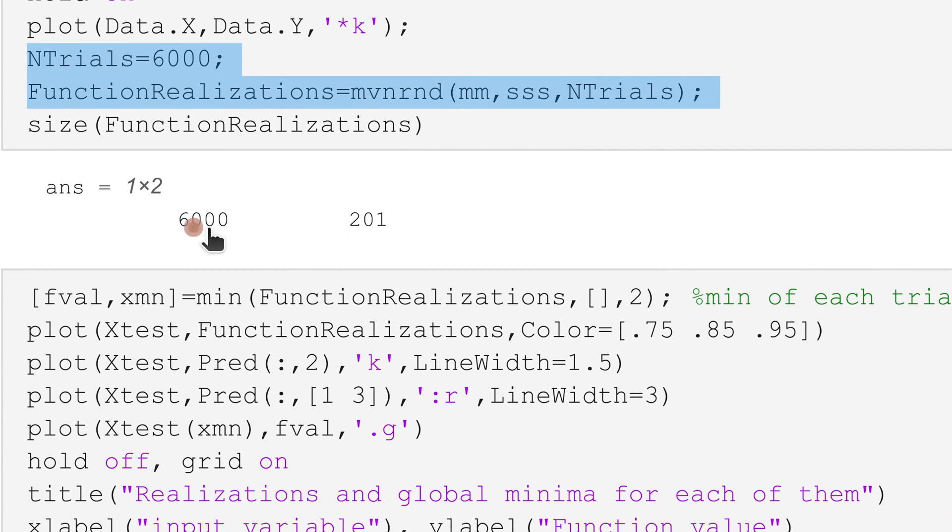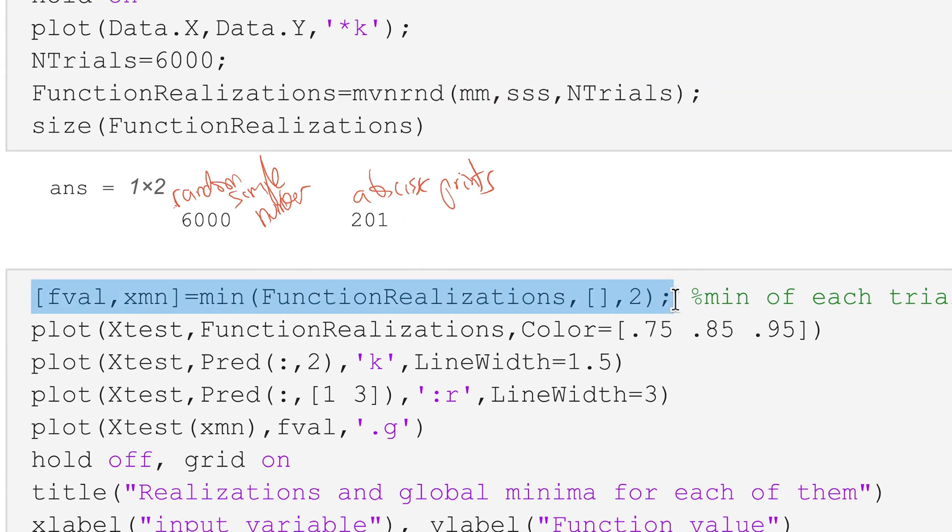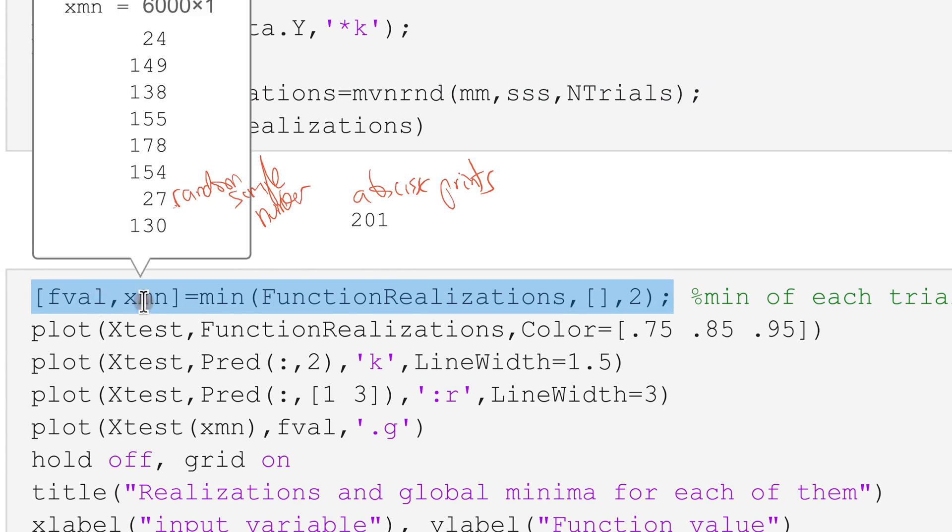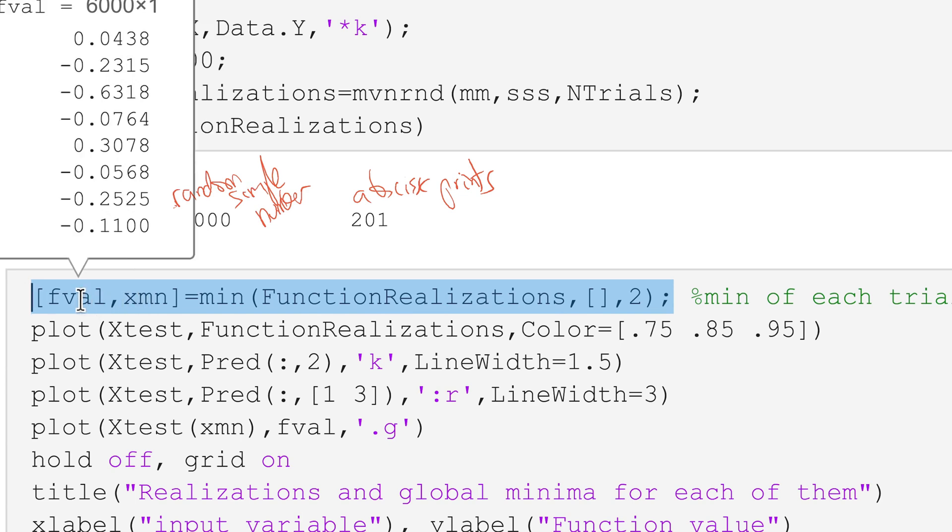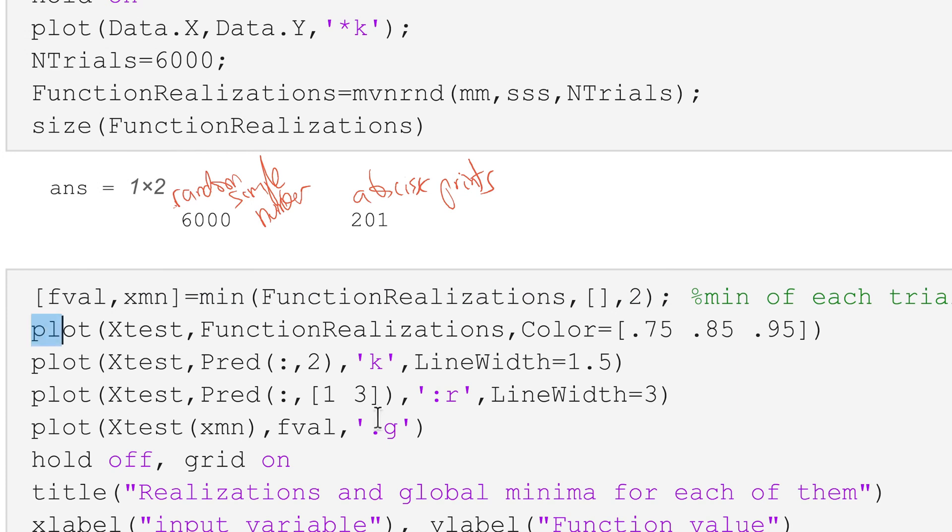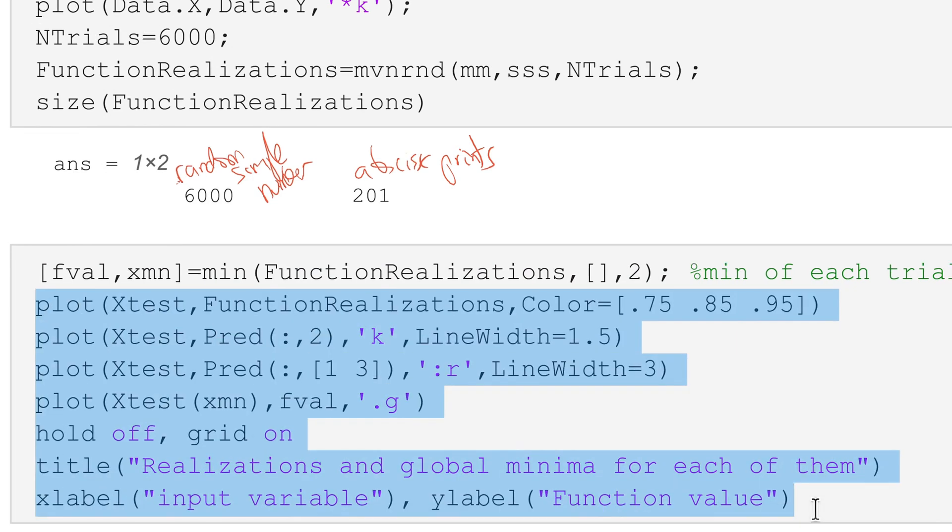So if I take six thousand trials, then I get six thousand samples of functions evaluated at 201 points in the abscissa. So these realizations have six thousand rows, each one for one of the functions, and the function values at 201 points are in each of the elements of the rows. So this line computes the minimum of each row and stores the position at XMN and the actual minimum value at FVAL. The rest is pure cosmetic plotting code.